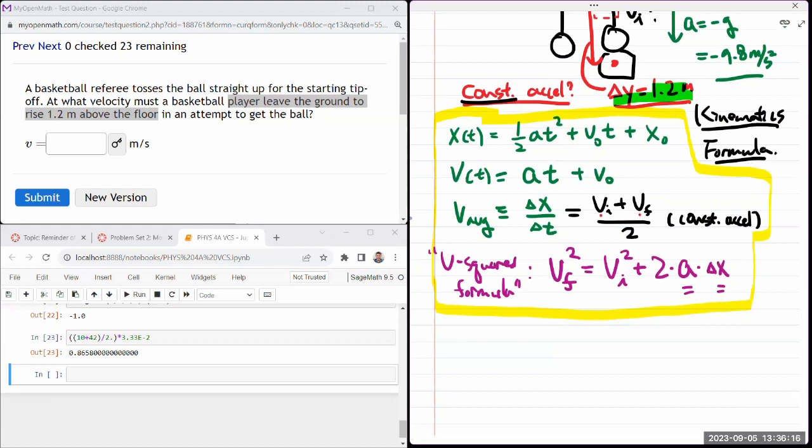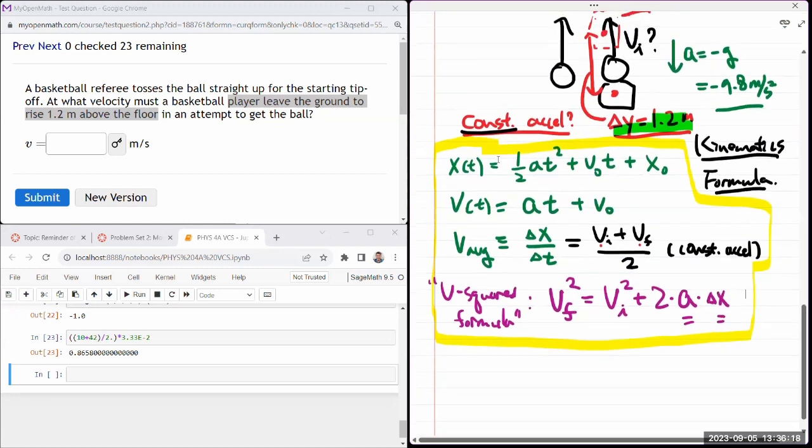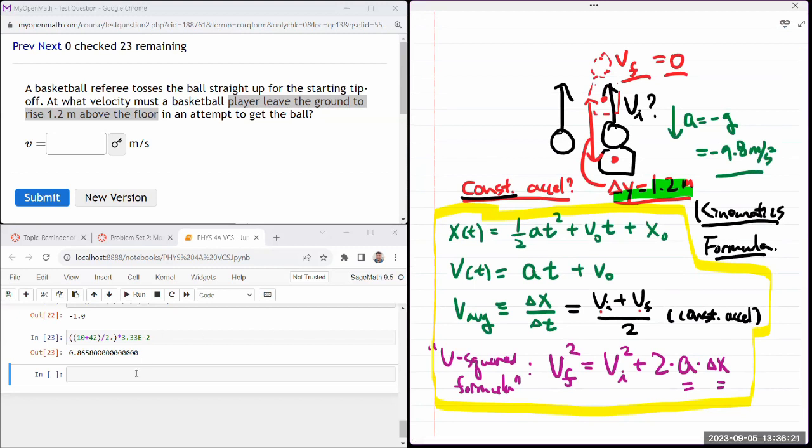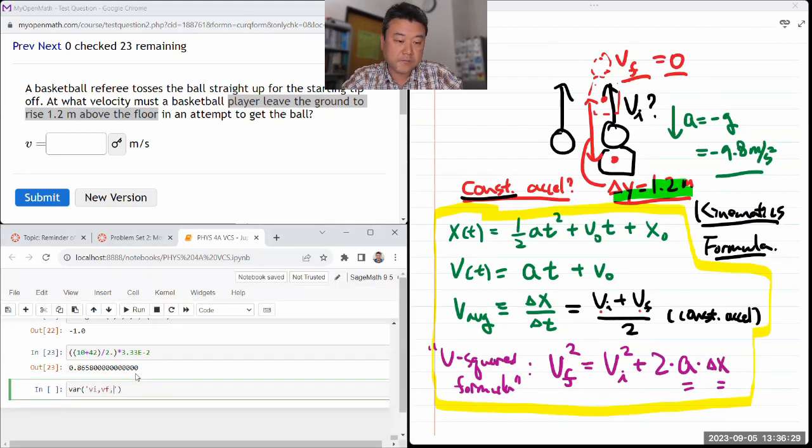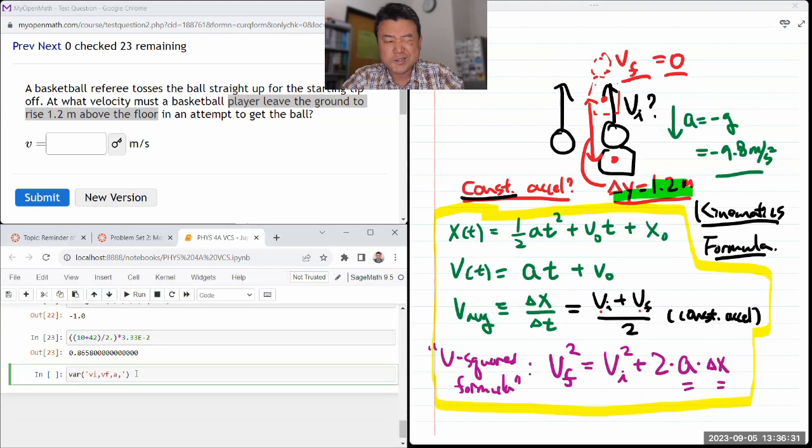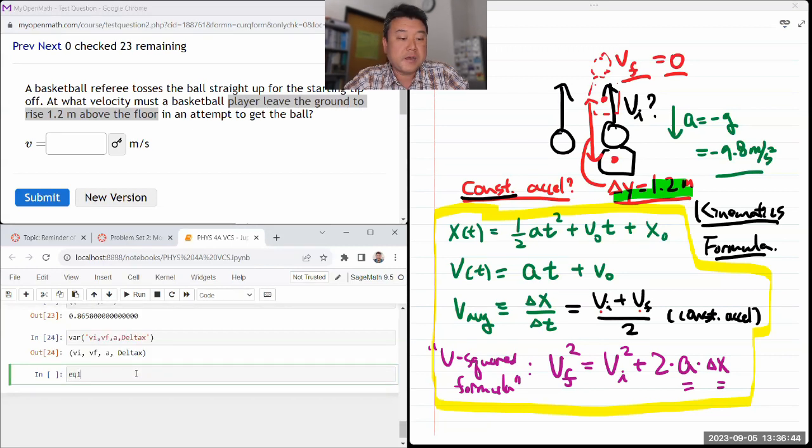Let me solve for the vi squared. Actually, instead of that, let me use sage math. I'm just going to be a little bit lazy and just let this calculator do everything for me, including the algebra. Let me first declare the variables: initial velocity, final velocity, acceleration, and delta x. I think that might be everything I need. I'll just plug in numerical value of acceleration. Those are my variables, and my equation is going to be v final squared is equal to - and note the difference between the assignment and equality symbol.